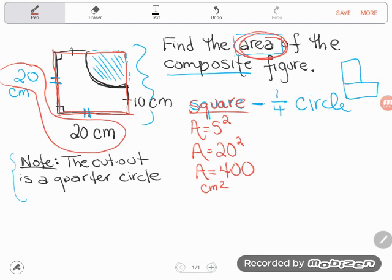So 400 square centimeters is what I'd get if I found this whole square. But I don't have that whole square, right? I have this piece taken out. So I need to remove this piece. In order to remove it, I better figure out how big this piece is. So we said it was a quarter of a circle.